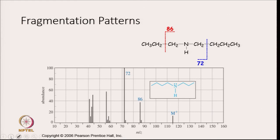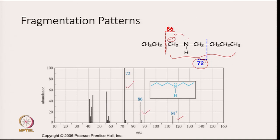Looking at the fragmentation pattern: if there is a breakage at this position, you will get a peak at 72. There is another cleavage possible at the alpha position — if it breaks at this position, again the positive charge will be resonance stabilized, and this whole fragment will correspond to a mass of 86. So in the mass spectrum, you will see a peak at M+ and peaks at 86 and 72.